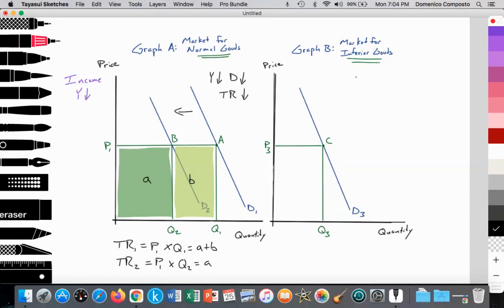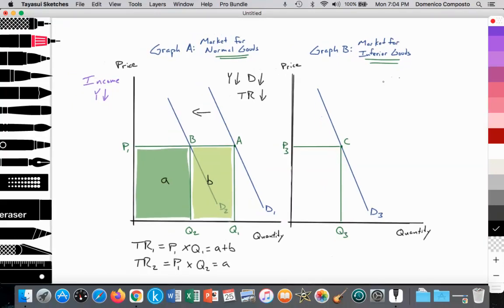What about inferior goods? If incomes are falling, households are sensitive to prices. They want to consume their necessities such as food and other necessities. They will not be able to afford the higher quality normal good. They're going to switch over to the inferior goods. So here we see the demand for the inferior goods rise from D3 to D4.